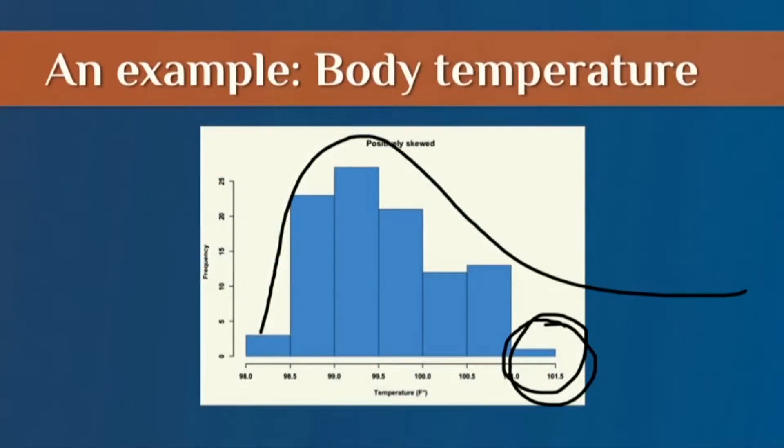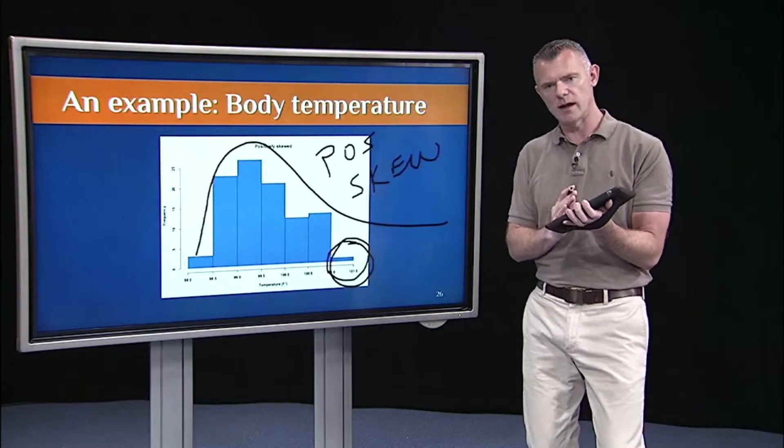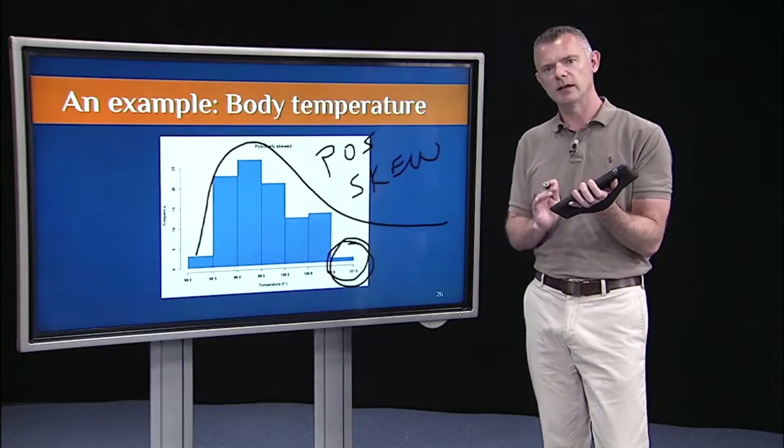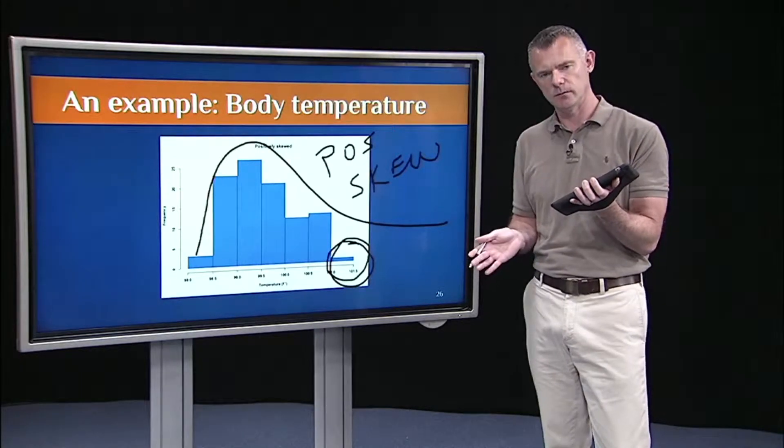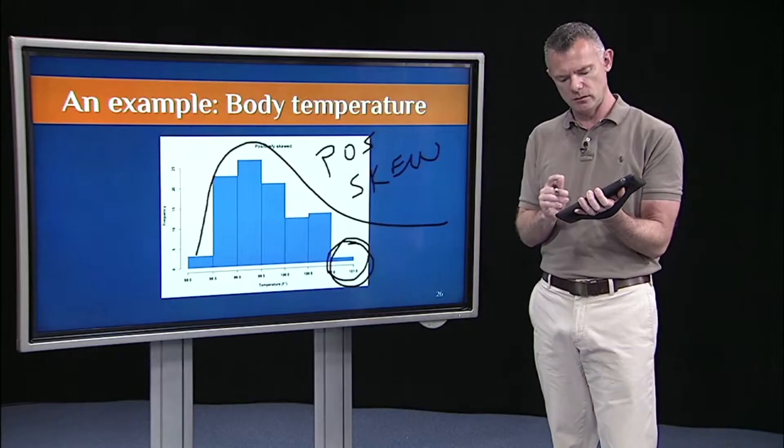So that's what's called a skewed distribution. And this is a positive skew. And the way to remember that is the skew is where there's few. So there are fewer scores at the positive or high end of this distribution. That's why it's a positive skew. So the skew is where there's few. This is a positively skewed distribution.